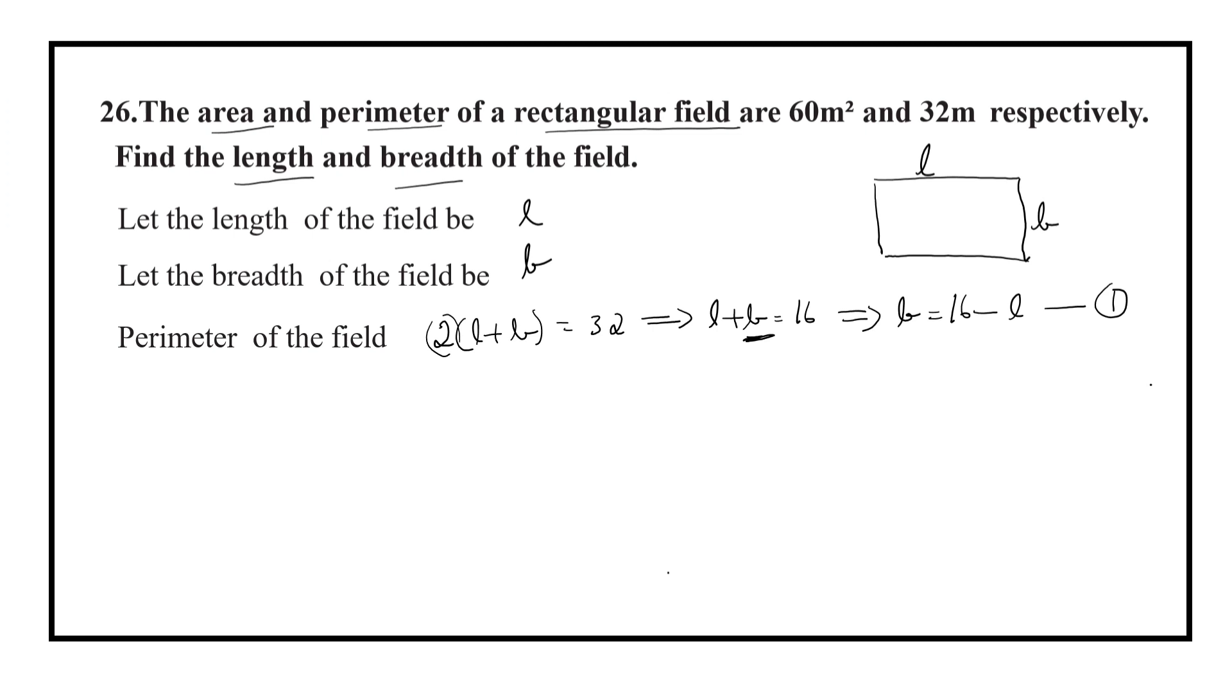We know that area of the field is equal to length into breadth, which is equal to 60. Now substitute the value of B, that is 16 minus L. L into 16 minus L is equal to 60.